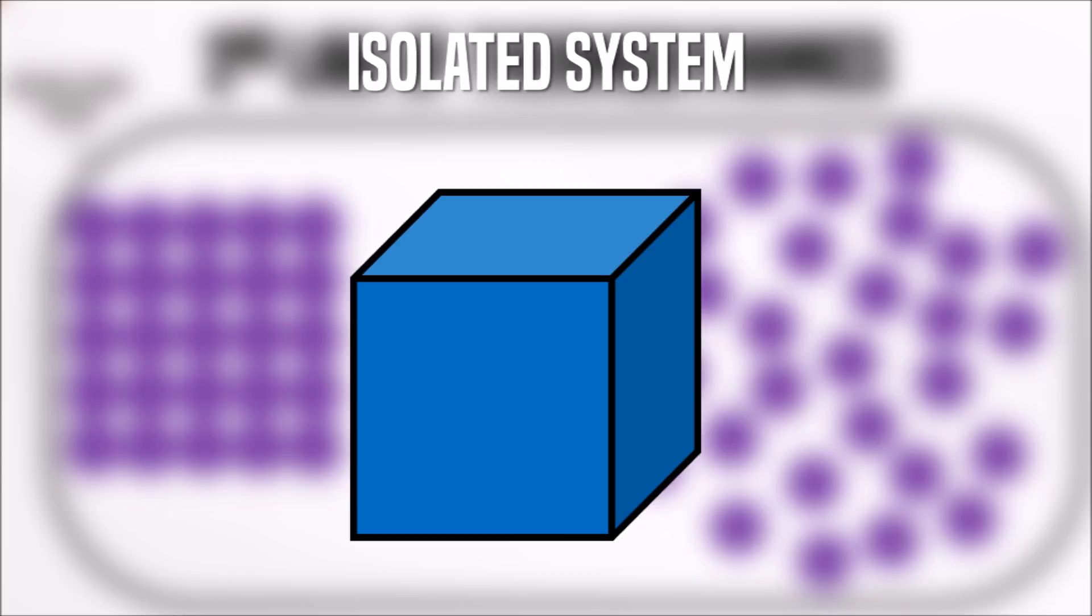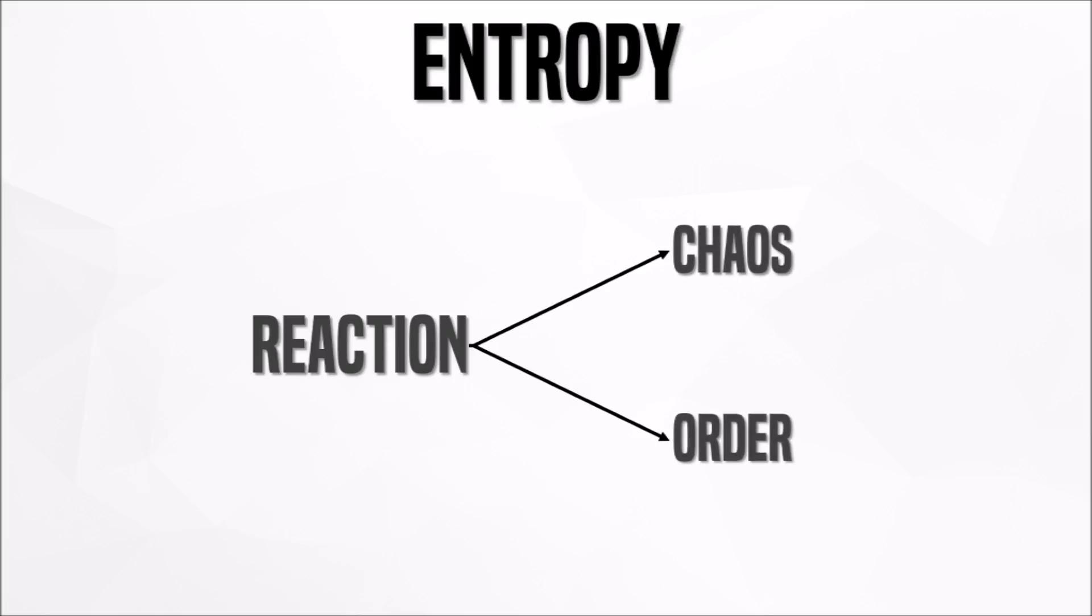The point is that these forces cannot provide energy to the system like the box. As for entropy, it is essentially the chaos in order, or lack thereof, that results from a certain reaction in a specific system, in this case the entire universe.